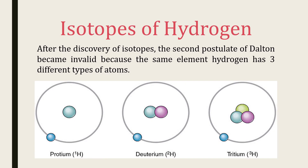Let's look at the isotopes of hydrogen — protium, deuterium, and tritium. In protium, there is only 1 proton in the nucleus and no neutrons, so its mass number is 1. In deuterium, 1 proton and 1 neutron are present in the nucleus, so its mass number is 2. In tritium, there is 1 proton and 2 neutrons, so its mass number is 3. After the discovery of isotopes, the second postulate of Dalton became invalid, because the same element hydrogen has 3 different types of atoms, or isotopes.